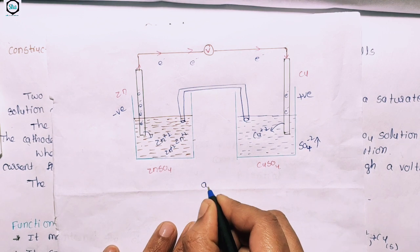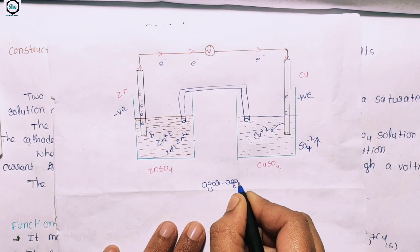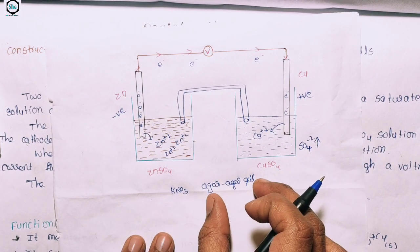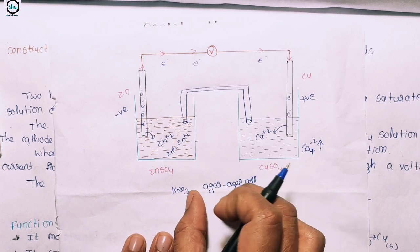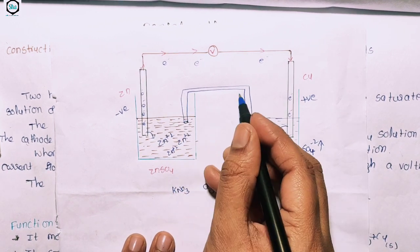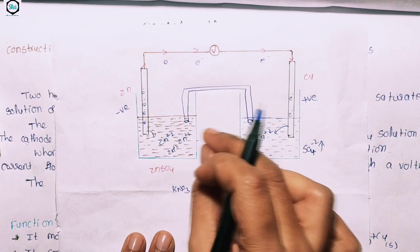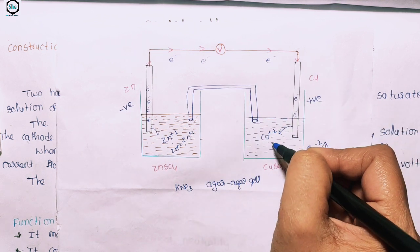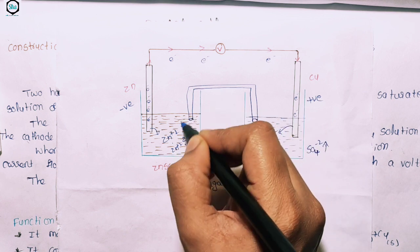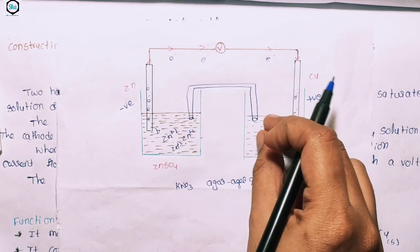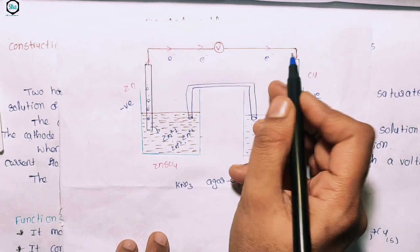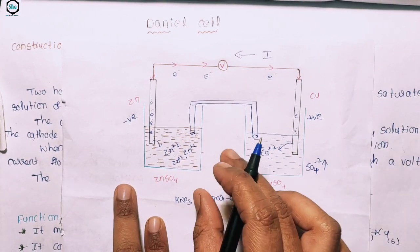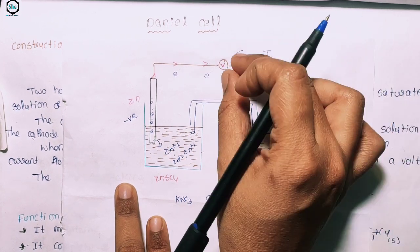The salt bridge contains KNO₃ solution, which can be used as a liquid or in powder form combined with agar-agar gel. Zn²⁺ ions flow out and Cu²⁺ ions are present on the other side. The ions from the salt bridge flow into both half cells, allowing electrons to flow and current to pass through the voltmeter.